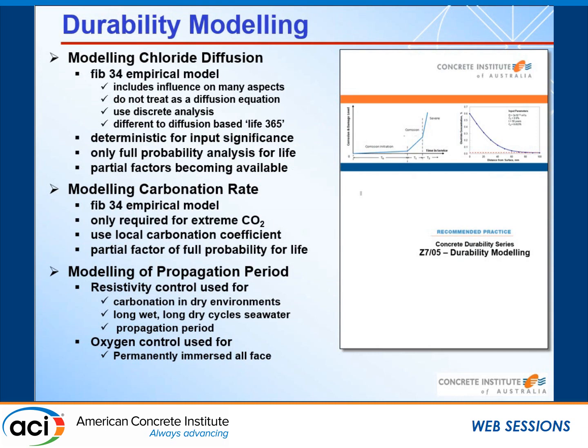Z705 is our durability modelling document, and it has proved to be the hardest one to put together so far. We brought together all our experts in Australia and they had different interpretations of the various models they brought to the table, so it's taken a while to get consensus. The three areas our group have looked at are chloride diffusion, carbonation rate, and the propagation period. It's still a work in progress, but it's been a very productive and worthwhile conversation and we're going to end up with a very useful document.